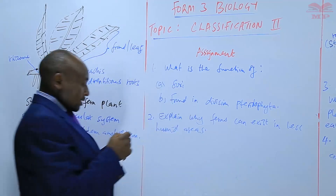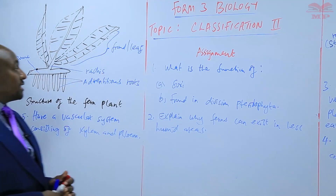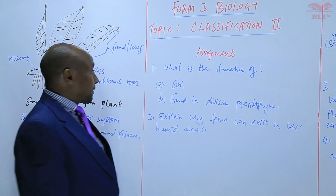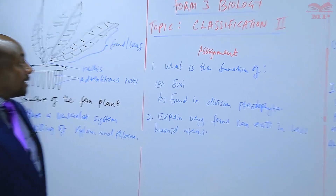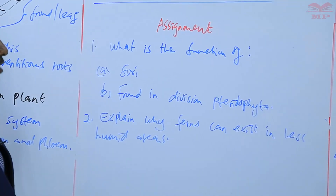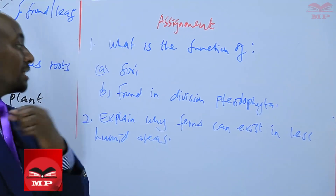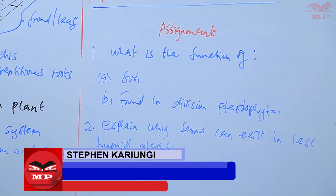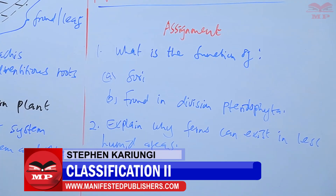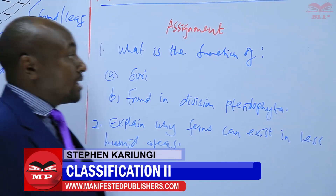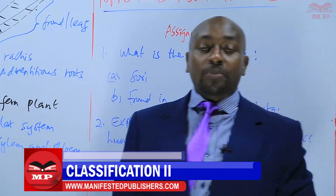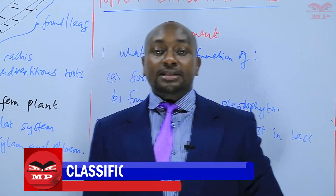For the assignment: the first question — what is the function of sorai? Number b — what is the function of a frond in Division Pteridophyta? And number two — explain why ferns can exist in less humid areas. We are going to stop there until next time. Goodbye.